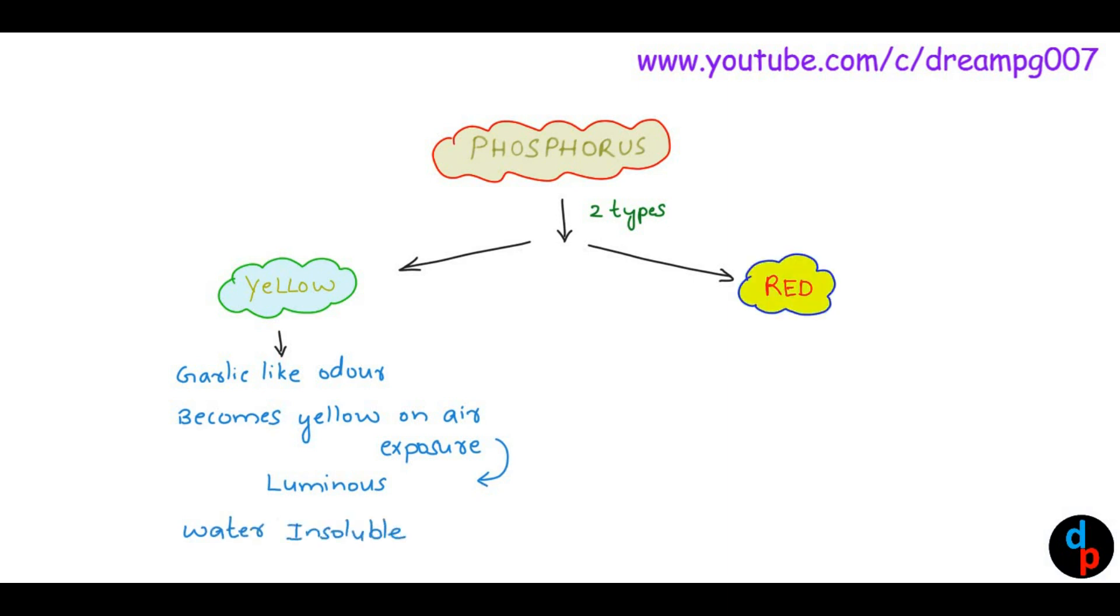Whereas, Red Phosphorus is non-toxic. It is usually seen on the side of matchboxes. Yellow Phosphorus is the toxic type of phosphorus.